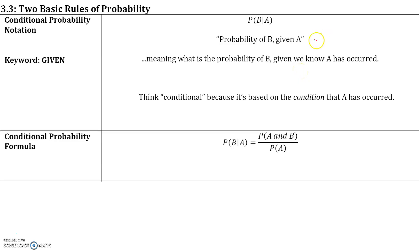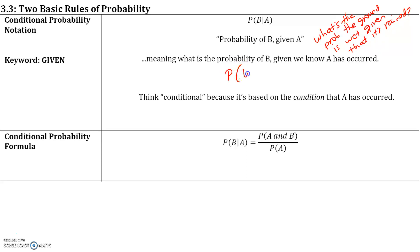For example, what is the probability that the ground is wet given that it has rained? This is an example of conditional probability. The probability is pretty high. In notation, you write: what is the probability that the ground is wet given that it has rained? Note that the event that came first actually goes second — the condition always goes second.